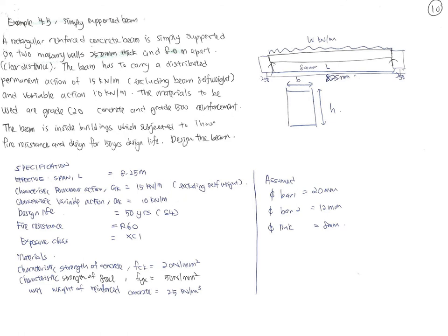Now we go through Example 4.5 — a simply supported rectangular beam — from the beginning through to detailing. The beam is simply supported on two masonry walls 250 mm thick. The clear distance is the effective span. Practice this example for revision.